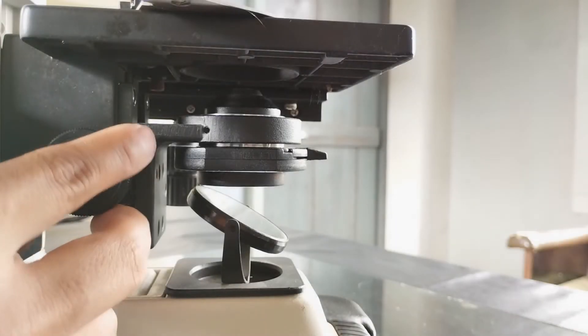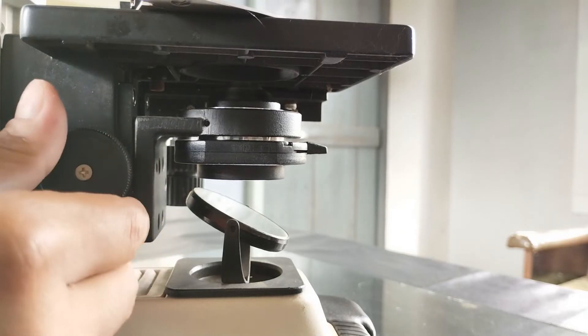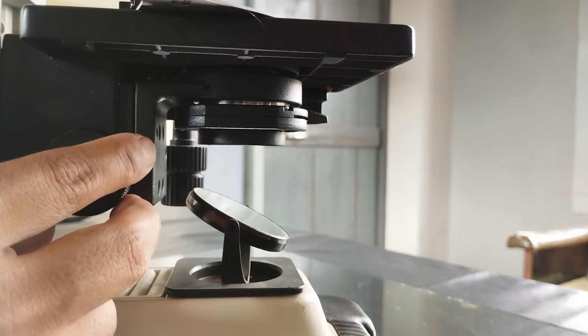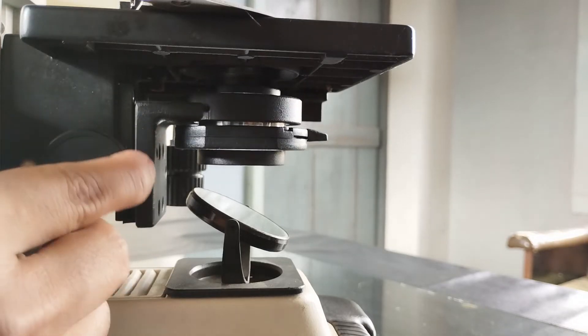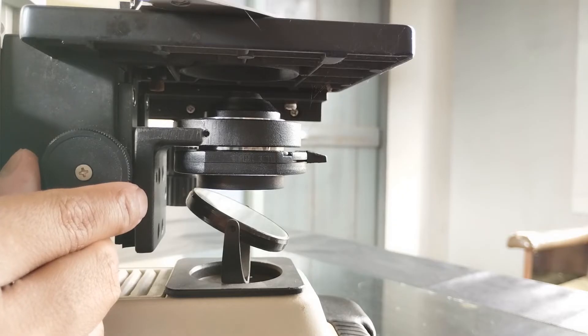The height of the condenser in some microscope models can also be adjusted. The closer the condenser is to the stage, the more critically focused the light is on the specimen, while the farther away the condenser is positioned from the stage, the more diffuse the light becomes and therefore the darker the image is.